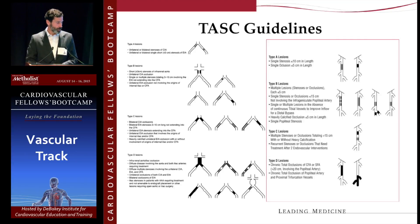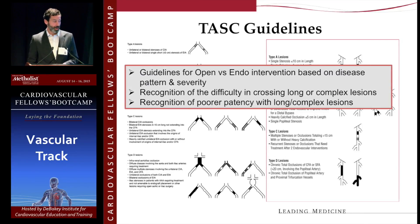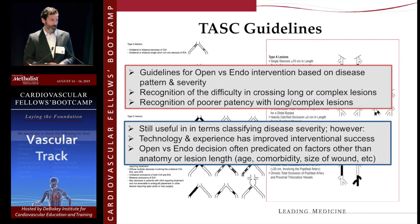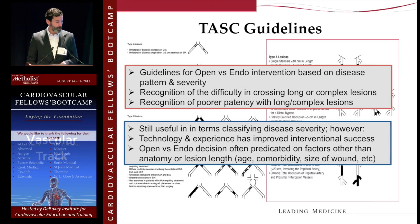We're all familiar with the TASC guidelines. There's a revised TASC classification for both aortoiliac disease and infrainguinal disease. These guidelines were developed to help decide whether to proceed with an open or percutaneous intervention based on disease pattern and severity, with recognition of the difficulty in crossing long complex lesions and the poor durability of complex lesions compared to simple TASC A or B lesions. I'm not sure how many of us really use the TASC classification to guide therapy at this point, though it's still useful for classifying disease severity. The technology has advanced — we can treat more complex lesions endovascularly — and the open versus endo decision is now predicated on factors beyond anatomy, such as age, comorbidity, and size of tissue loss.